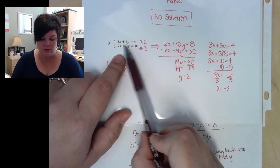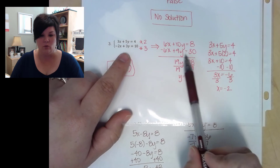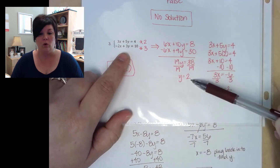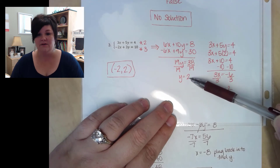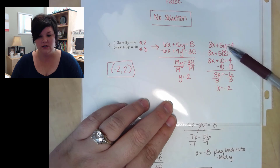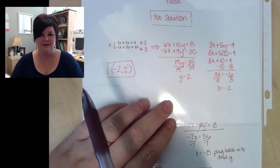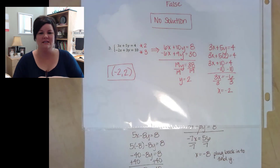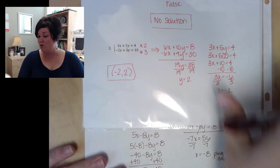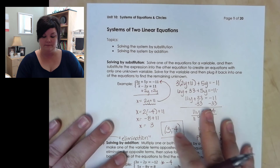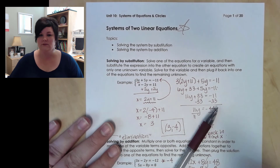For number 3, I cleared x's by multiplying the top equation by 2 to get 6x plus 10y equals 8, and the second by 3 to get negative 6x plus 9y equals 30. The x's cancel and solving gives y equals 2. Plugging back into the first equation gives x equals negative 2. The solution point is (−2, 2). If you have questions, let me know. You should now be able to finish the Newton-Alta homework on systems of two linear equations.